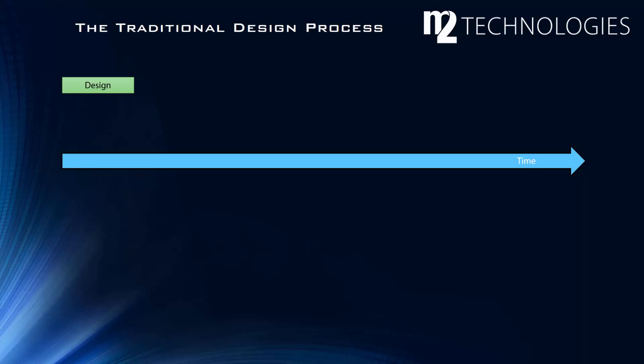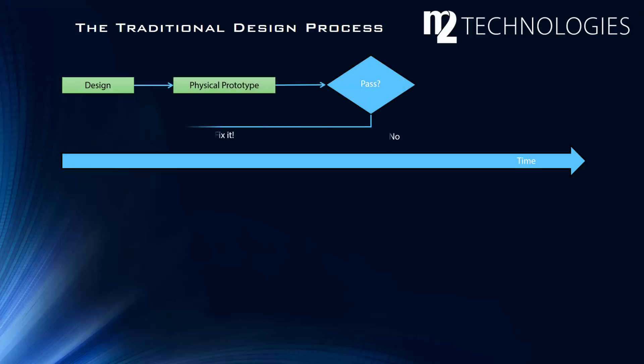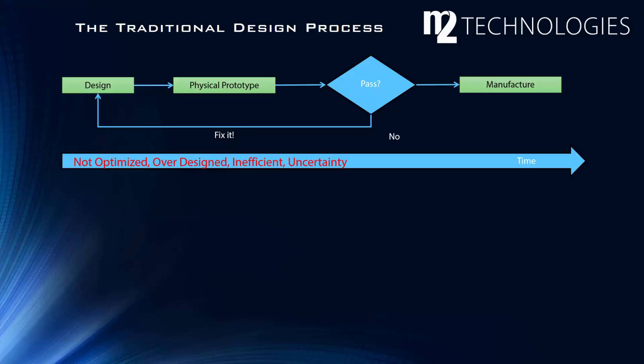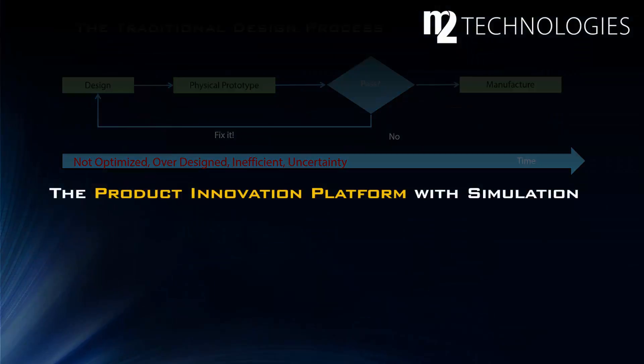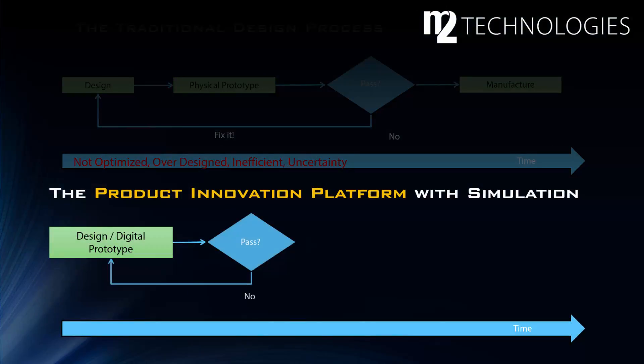In the traditional design process, the initial concept is developed using past experience, hand calculations, and educated guesses. It is not unusual for the first physical prototype to fail, requiring another iteration — more design time and another prototype to build. Each iteration adds cost and increases time to market. Even when a design passes physical testing, there is little confidence it is optimized. In contrast, the Product Innovation Platform uses simulation — virtual testing — to eliminate failed designs before a physical prototype is ever constructed.